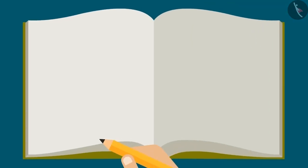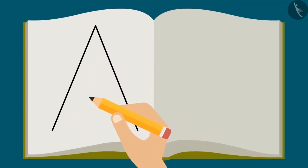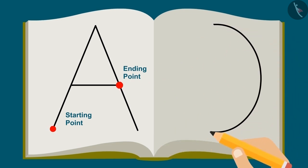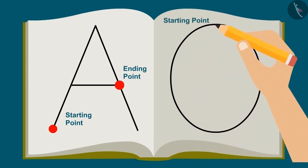Look here Riva. When we write the alphabet A on paper, the starting and ending points are different. And hence it is called an open shape. And if we draw O on paper, then the starting and ending points are the same. Hence it has a closed shape.